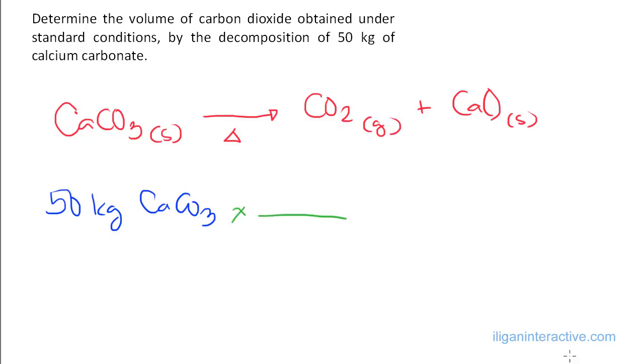That is where we use the molar mass of CaCO3. From our reference periodic table, it's 100.09 kilograms per kilomole. So 100.09 kilograms of CaCO3 equals one kilomole of CaCO3.